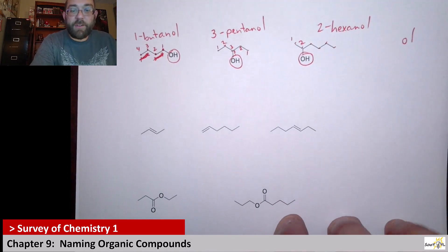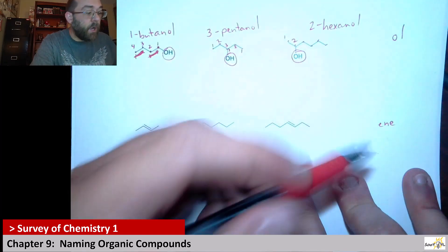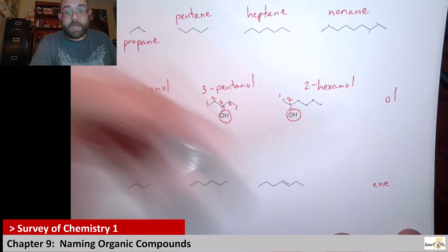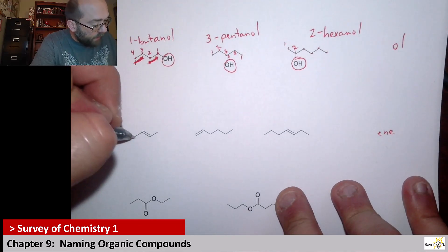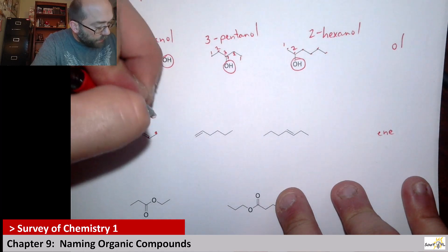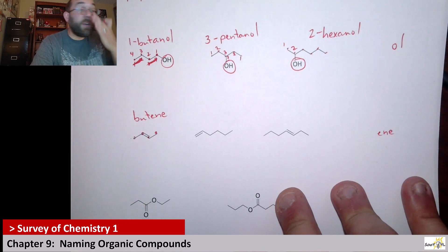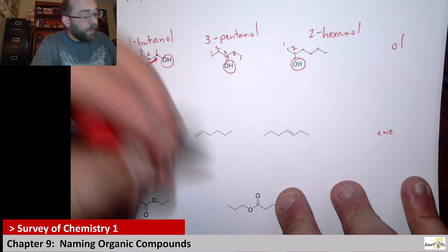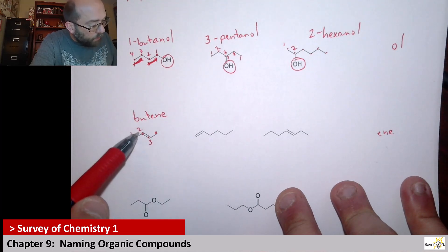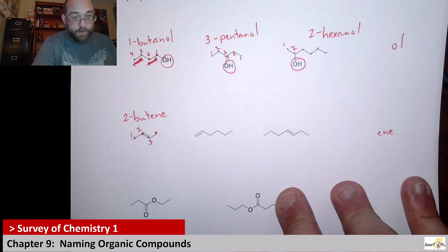Now, here we have another functional group — not an alcohol, but an alkene. All of these end in E-N-E. The A-N-E turns into E-N-E. We count the number of carbons: one, two, three, four — so this is bute for four, meaning it's butene. The double bond goes between carbons two and three, so you use the first carbon that sees the double bond. This would be called 2-butene.